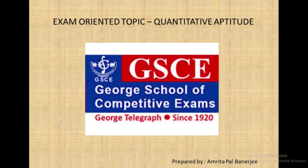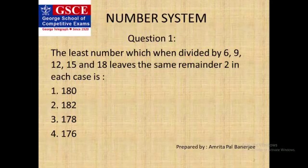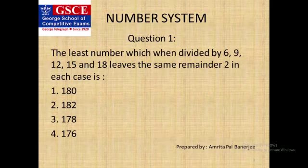Now the first question: the least number which when divided by 6, 9, 12, 15 and 18 leaves the same remainder 2 in each case.